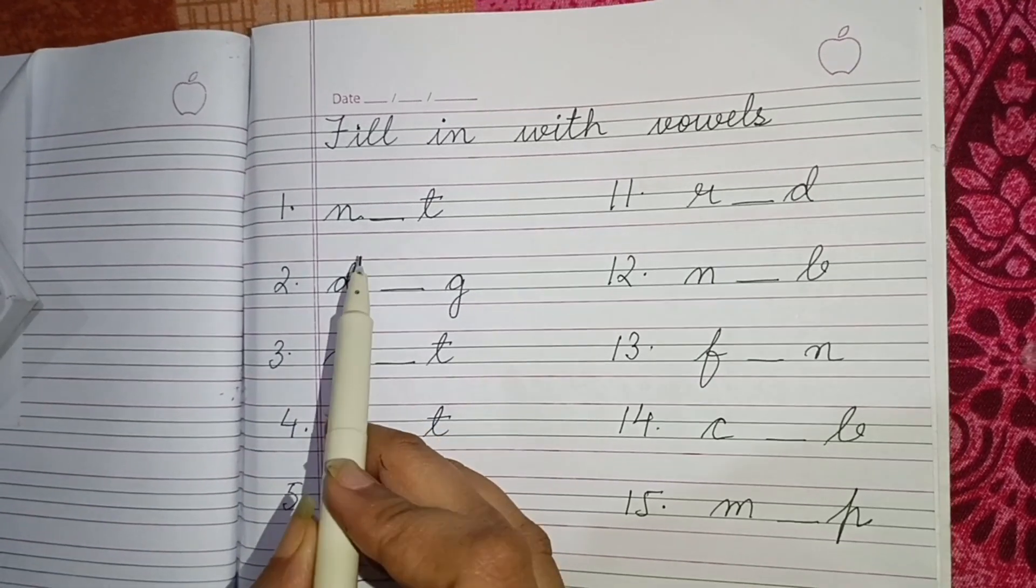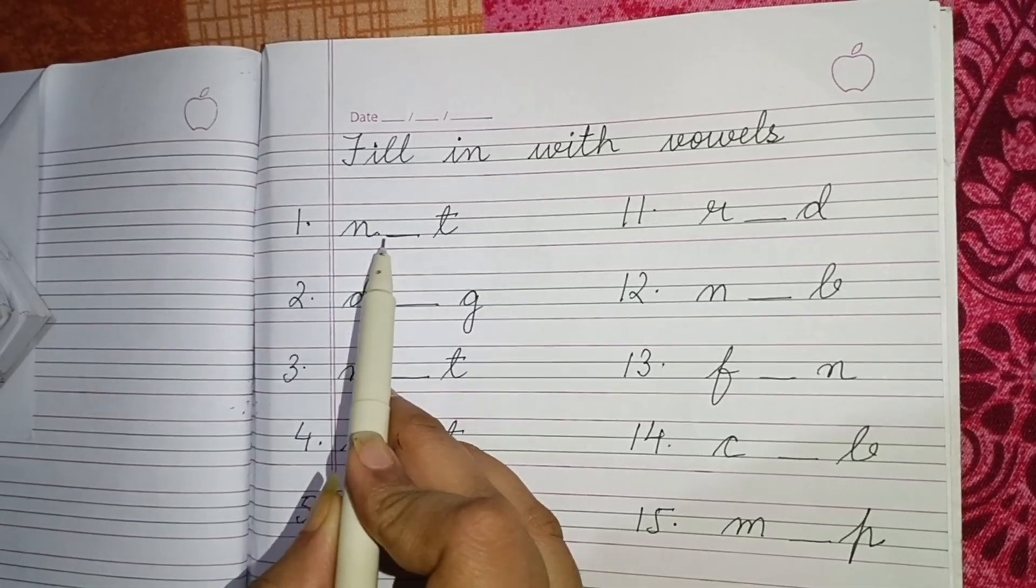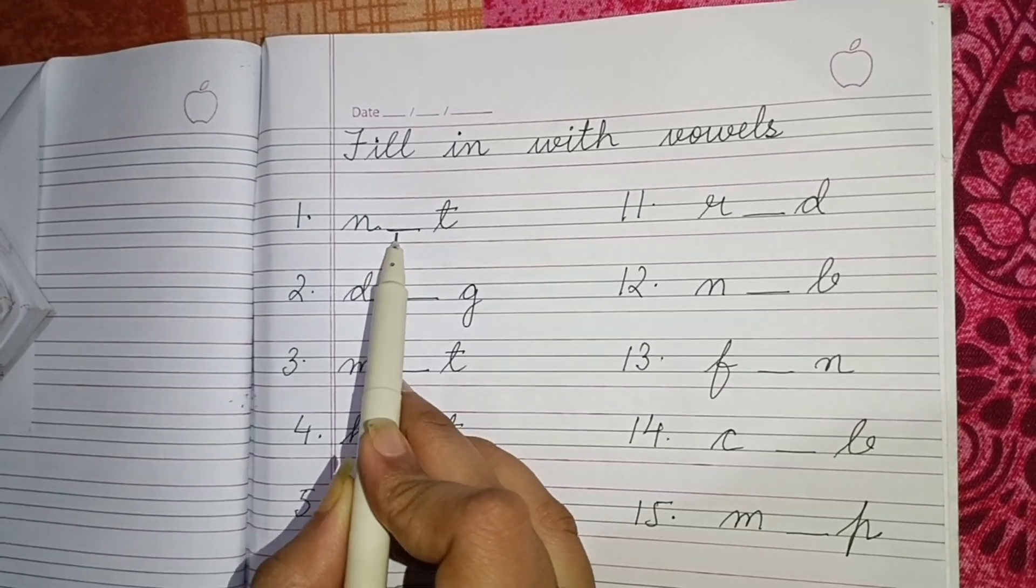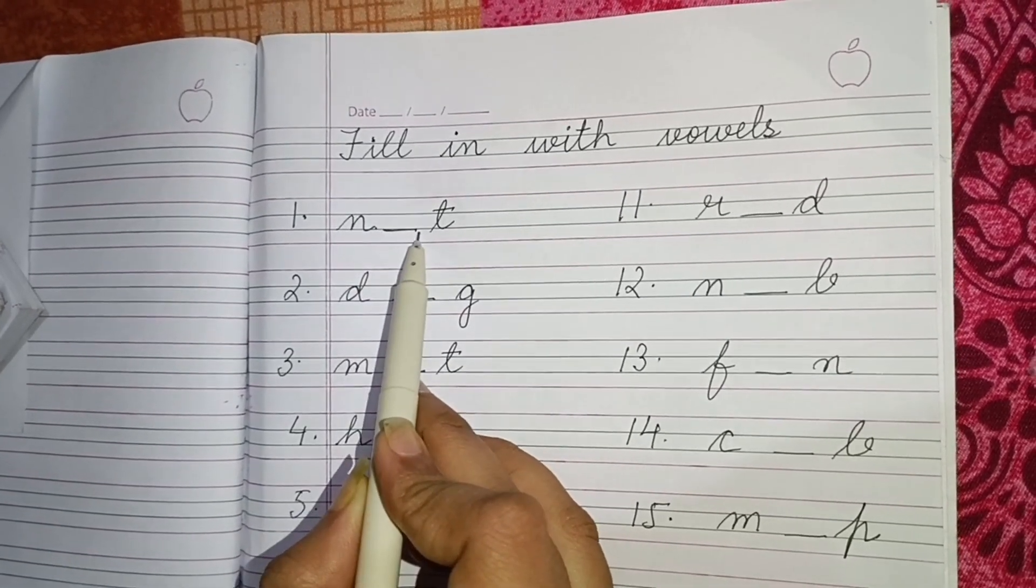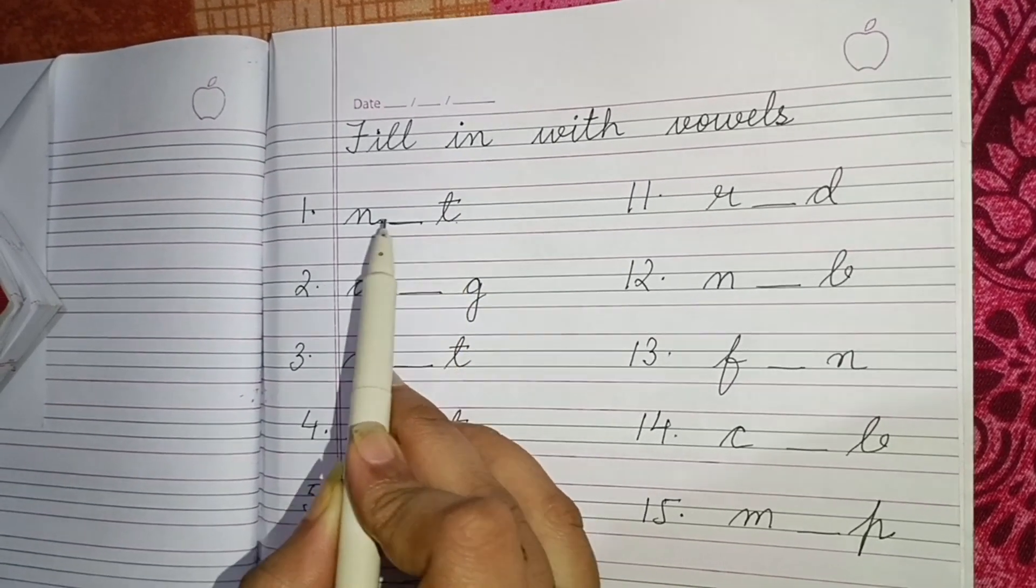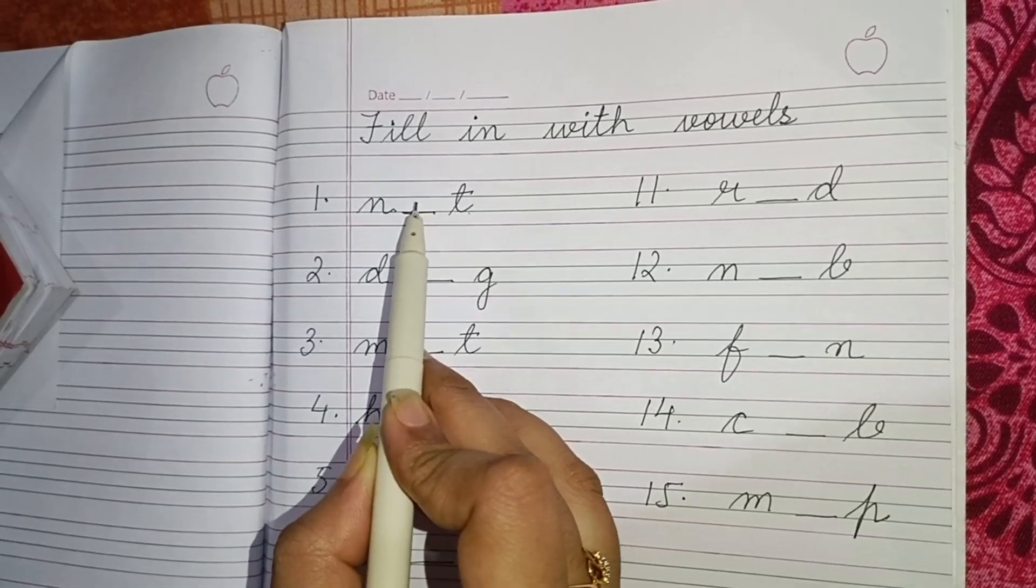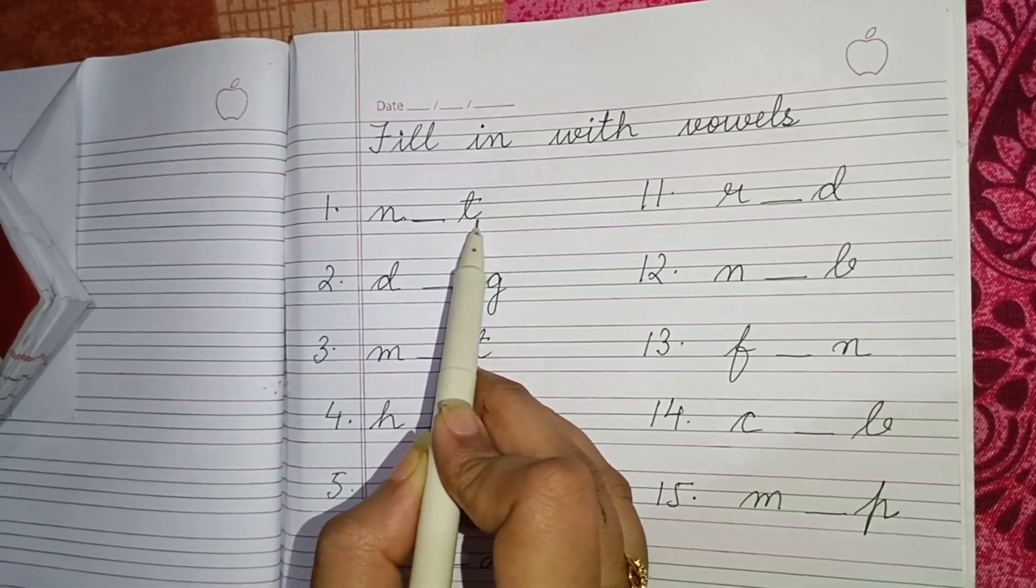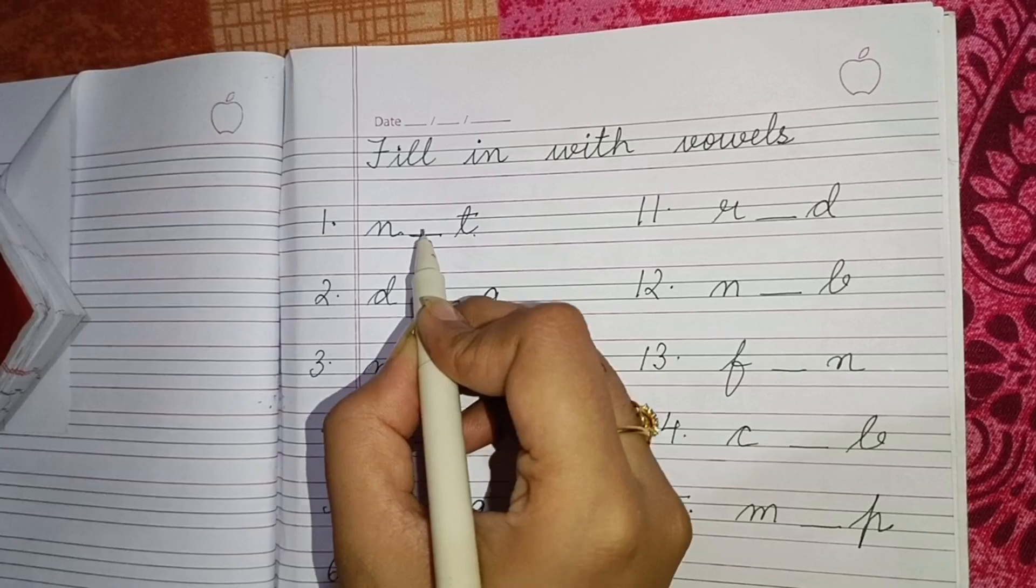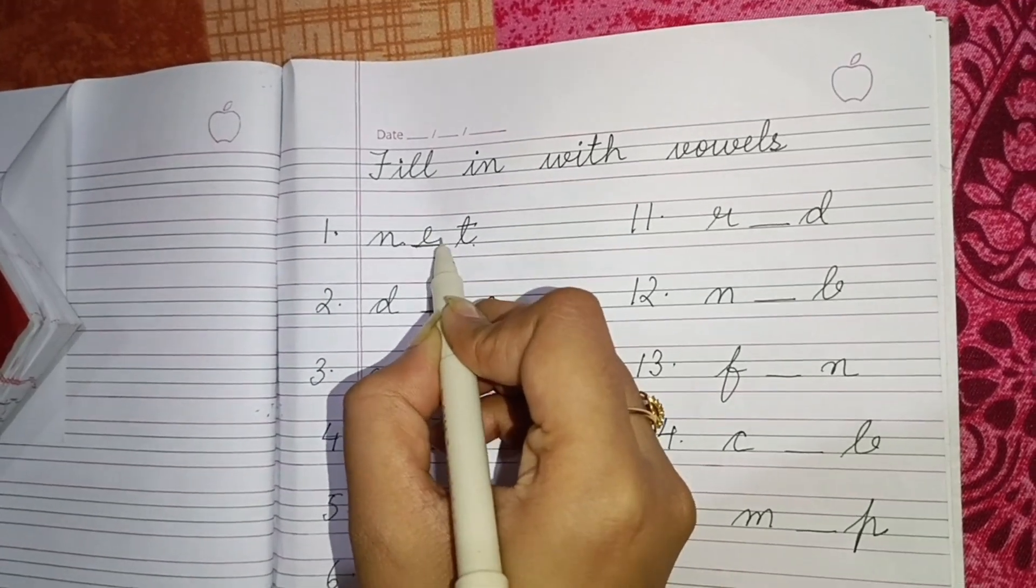Here you can see the first letter is N and after N there is a dash means a blank, and after that is T. So you have to fill in the letter which will be between N and T. So it will be E, N E T, net.